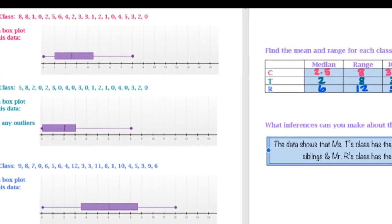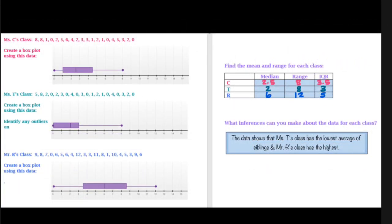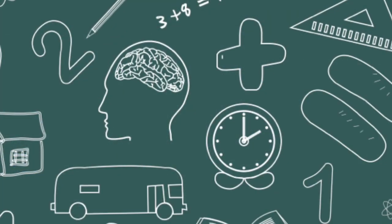So what can we infer here? Well, the data shows that Miss T's class has the lowest average of siblings. See, everything's shifted to the left. And Mr. R's class has the highest. Things are shifted more to the right. Where Miss C's class is kind of in between.